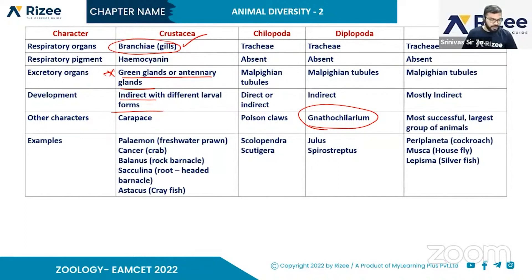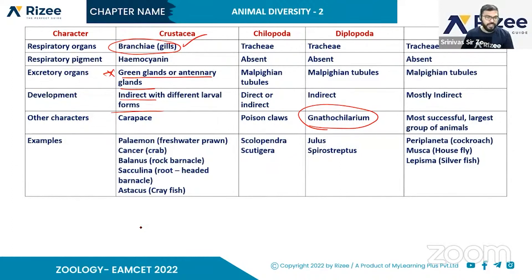Examples in Crustacea include: Chalicea, Palemon, Cancer, Balanus, Sacculina, Astacus, and Snaevi. Examples in Chilopoda include Scolopendra and Scutigera.